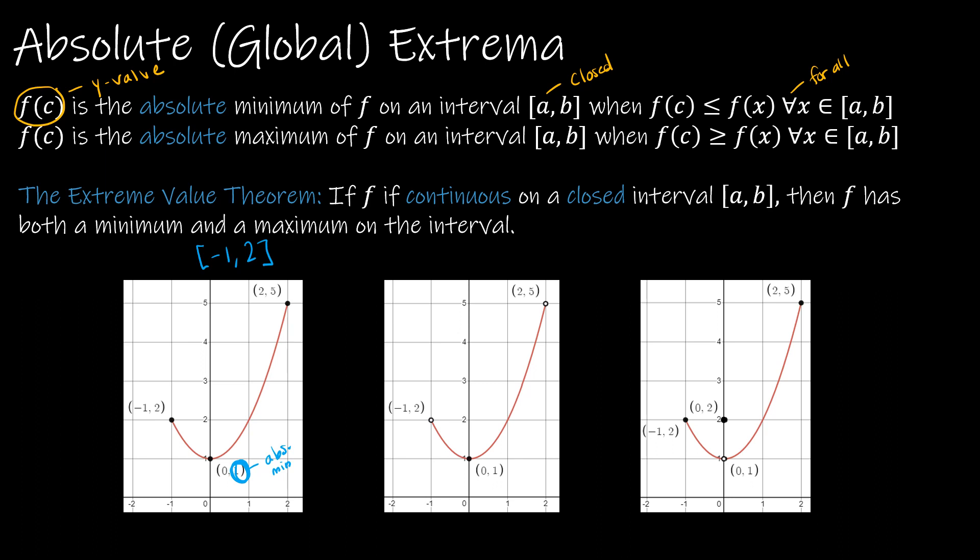What is the absolute maximum? Again, just by looking at the picture, I can see that 5 is the absolute maximum. Now, I do have another endpoint over here, but notice it's neither the greatest nor the least. So 2 falls between 5 and 1. So that one doesn't really do anything for us.